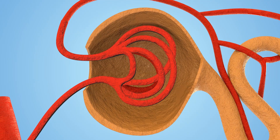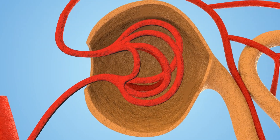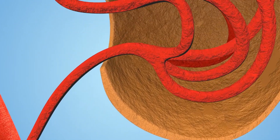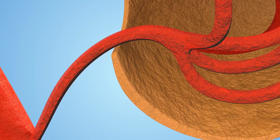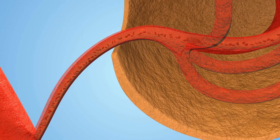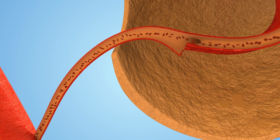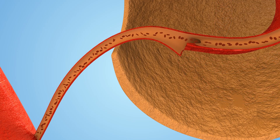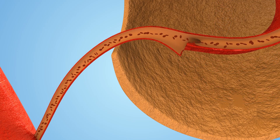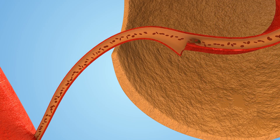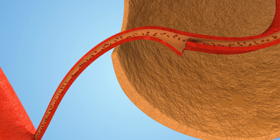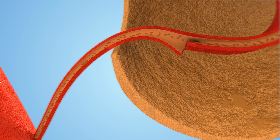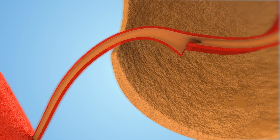This is a magnified view of the afferent arteriole, the artery that provides blood to the glomerulus. Every time your heart beats, the left ventricle of the heart pushes blood into these arteries. The pressure of that blood within the arteries that pushes against the arterial wall is your blood pressure.